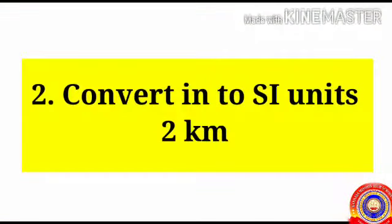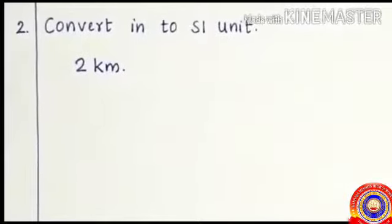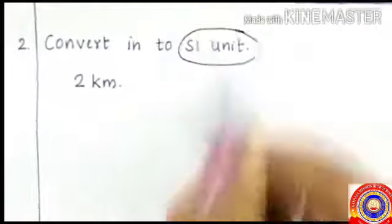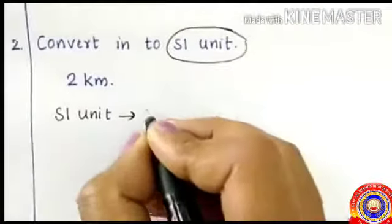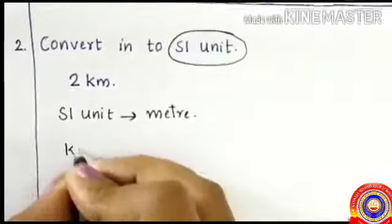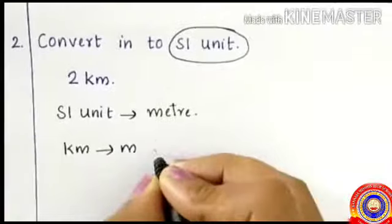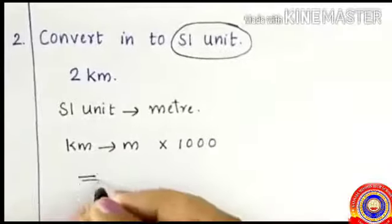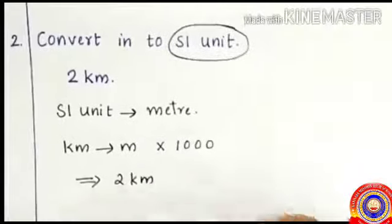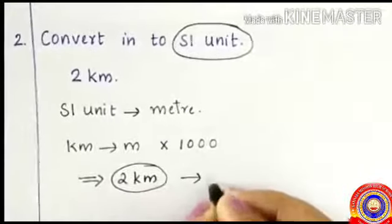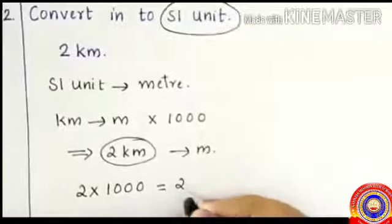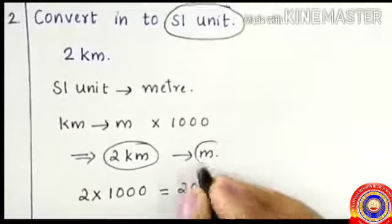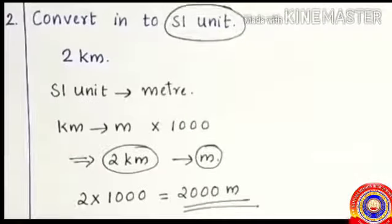Second question: convert two kilometers into SI unit. From the unit kilometer, we can identify it is a unit of length, so we need to find the SI unit of length, which is meter. To convert kilometer to meter, multiply by one thousand — two into one thousand equals two thousand meters.